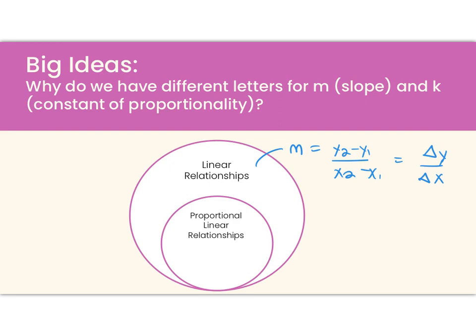And then for proportional linear relationships, we represent our rate of change using k, which is our y values over our x values. And so k and m really do represent distinct ideas, because k is talking about a specific subset of linear relationships that also happen to be proportional. And because they're proportional, we can use a little shortcut when calculating our rate of change.